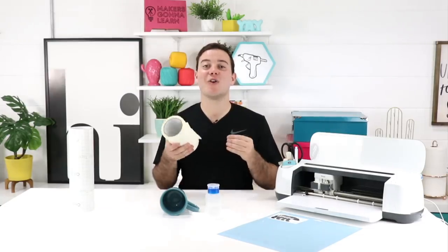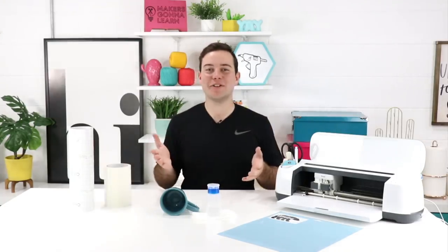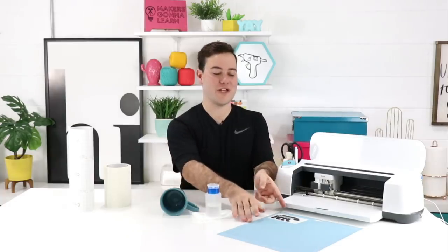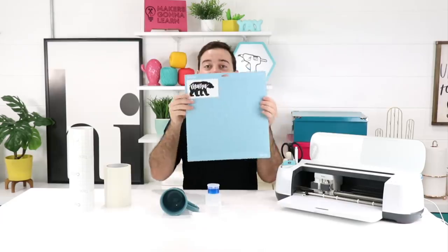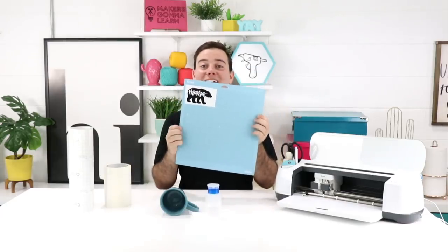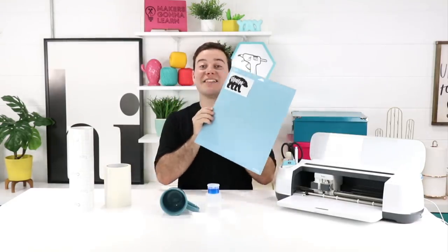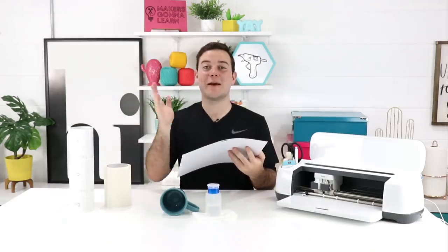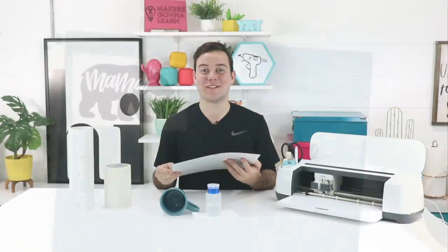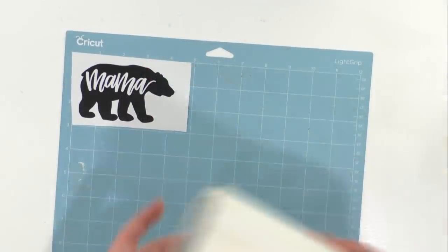Tip number two is let the mat work for you. I'm a huge advocate about being able to weed on your mat as well as being able to use the mat as a third hand for when you're applying things and transferring the vinyl decal onto the transfer tape.